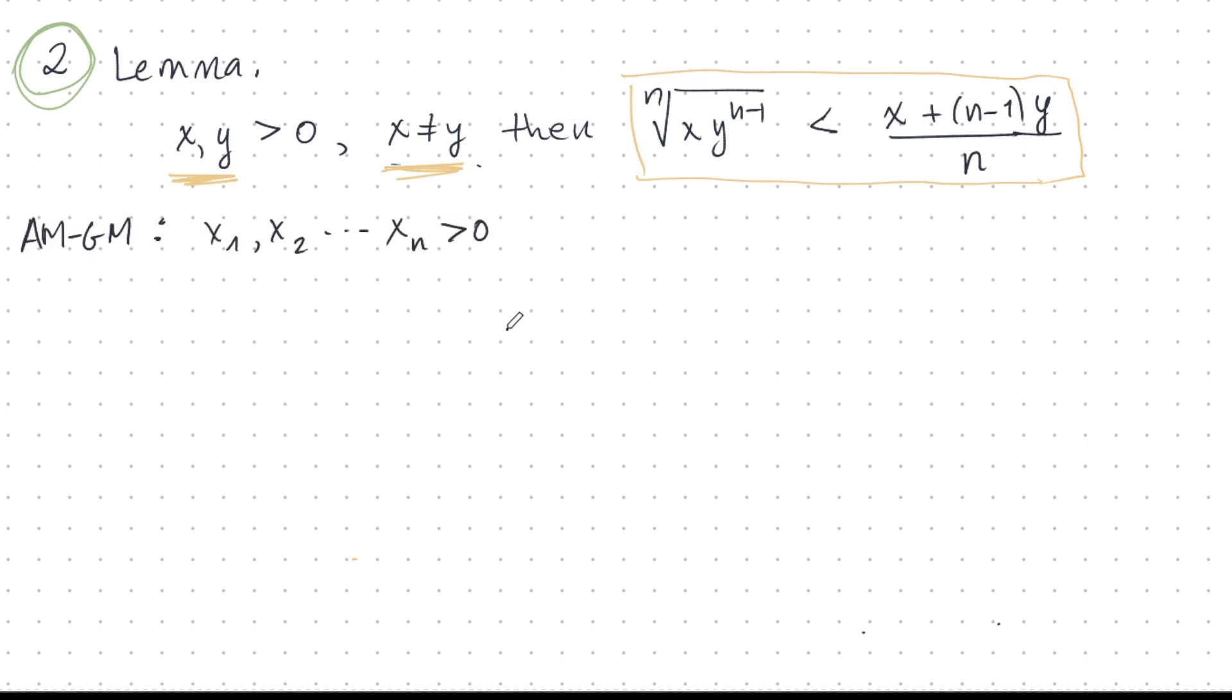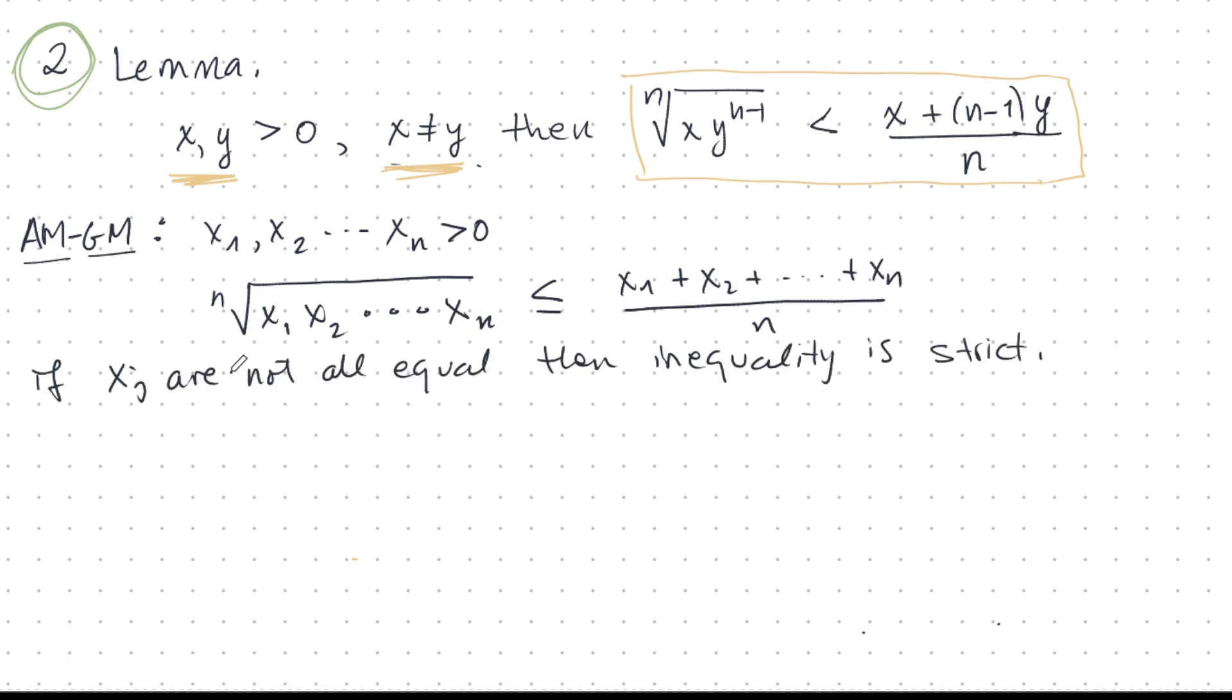If I have n positive numbers, x1 to xn, the MGM or arithmetic geometric mean inequality tells me the following. The geometric mean of the product or the geometric mean of all these numbers is less than or equal to the arithmetic mean. With the following interesting twist. If these x_j are not all equal to each other, then this inequality here is strict. So this inequality less than or equal becomes just less than.